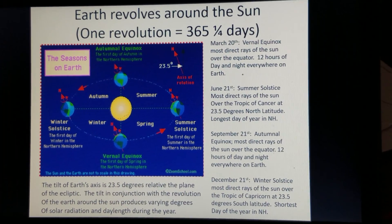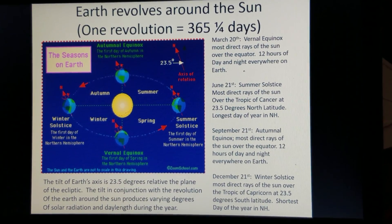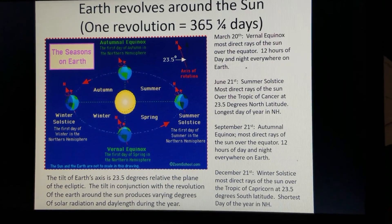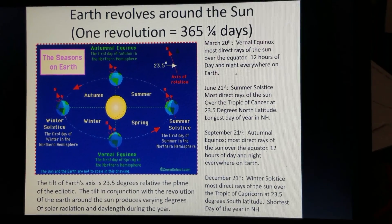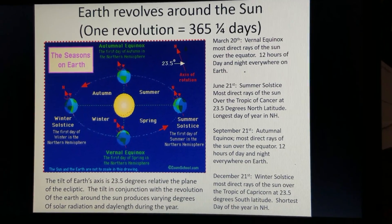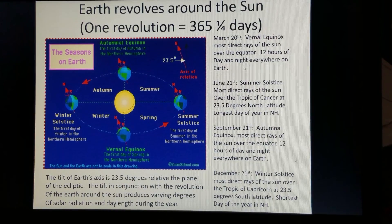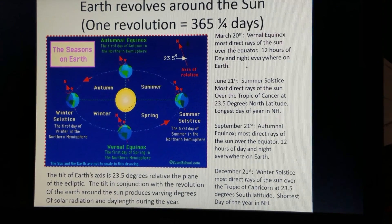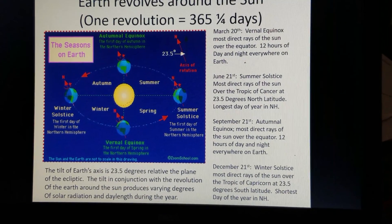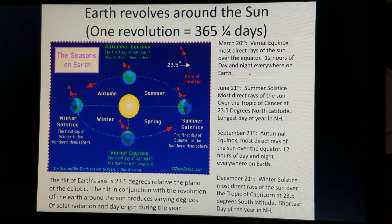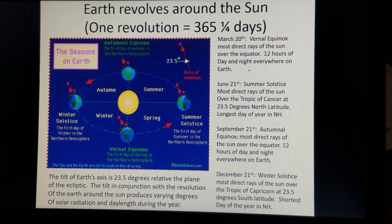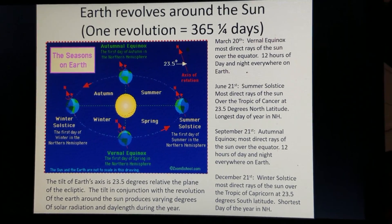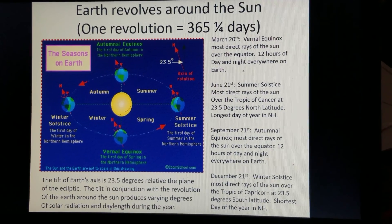And then finally, the December 21st time period — which we're rapidly approaching in a few weeks — is the winter solstice, where the most direct rays of the Sun are overhead the Tropic of Capricorn at 23.5 degrees south latitude. This is the shortest day of the year in the Northern Hemisphere, and the first day of summer in the Southern Hemisphere.